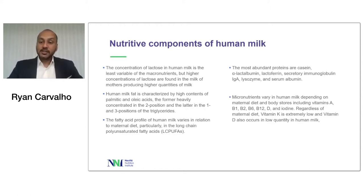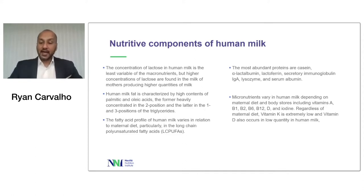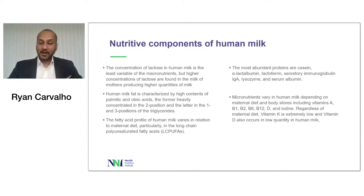When we talk about proteins, the most abundant are the whey components — including alpha-lactalbumin, lactoferrin, secretory IgA, lysozyme, and serum albumin — as well as the casein component of human milk. When we talk about micronutrients in human milk, they vary depending on maternal diet and body stores, even preconception. These are nutrients like vitamin A, the B vitamins, vitamin D, and iodine. Recommendations exist for vitamin K at birth and vitamin D supplementation, including in breastfed children, because breast milk tends to have lower levels of vitamin K and vitamin D.